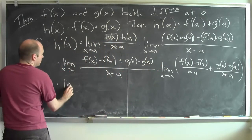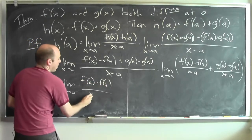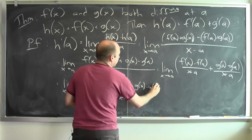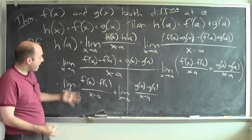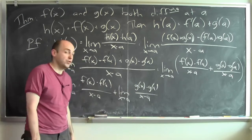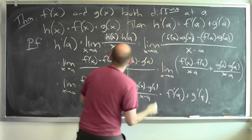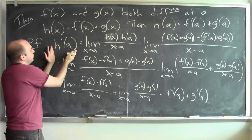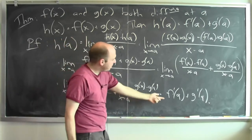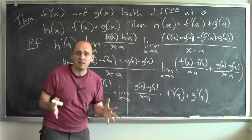So this equals the limit as x goes to a of f of x minus f of a over x minus a, plus the limit as x goes to a of g of x minus g of a over x minus a. And because I know those two limits exist and I even know what they're equal to — this first limit is the derivative of f at a, the second is the derivative of g at a — this is f prime of a plus g prime of a. And that's exactly what I wanted to show. I wrote down the definition of the derivative of h at a and applied properties of limits to conclude it equals f prime of a plus g prime of a. This is what tells me how to calculate the derivative of a sum.